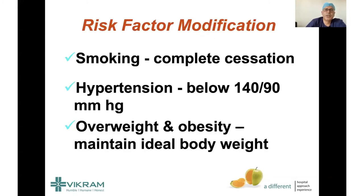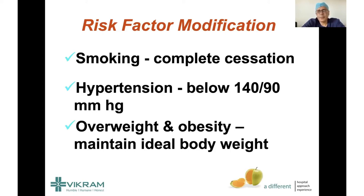For risk factor modification: smoking or tobacco in any form is an absolute no — you should stop completely. There is no such thing as a half-smoker; it's a misconception that reducing smoking reduces risk. If you completely stop smoking or tobacco, it takes two to three years to reduce the risk to the level of a non-smoker, provided you have not already developed heart disease. For blood pressure, the simplest target is below 140/90, but preferably keep it below 130/80. Simply taking medication is not enough — you need to keep checking to ensure medicines are working.